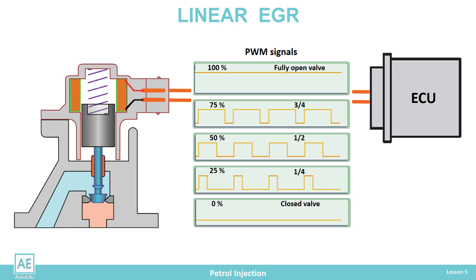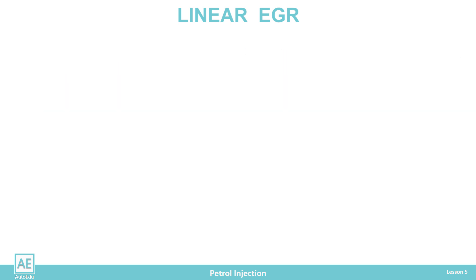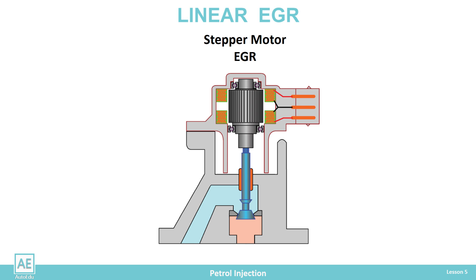The longer the opening period of the PWM signal, the stronger the magnetic field and the more the valve opens. When there is no power, the spring closes the EGR valve. With the second type of linear EGR valve, positioning is done using a stepper motor; the valve opens in steps. The stepper motor is powered from the engine control unit via a six-pin connector. Depending on the combination of power supply to the different coils, the motor rotates to an appropriate position, opening and closing the valve in steps.